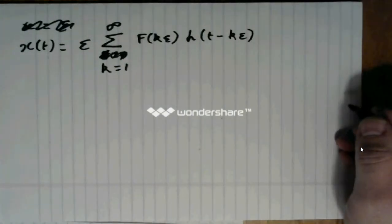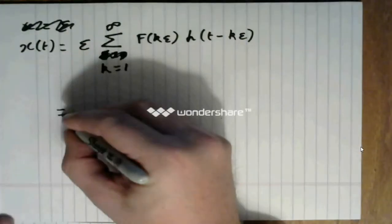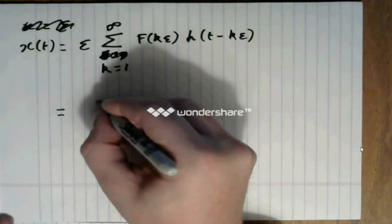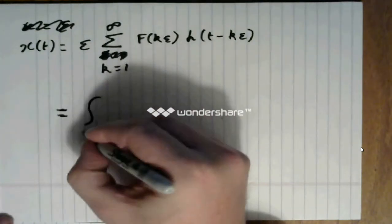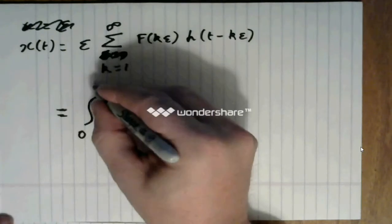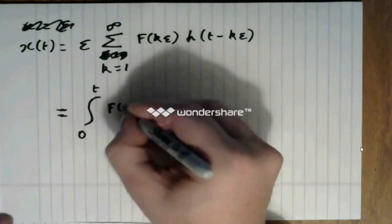which I can again approximate as an integral, which is the sum from zero to t of f of tau.